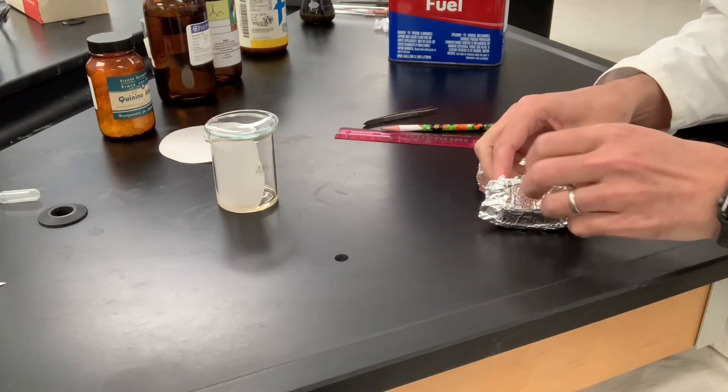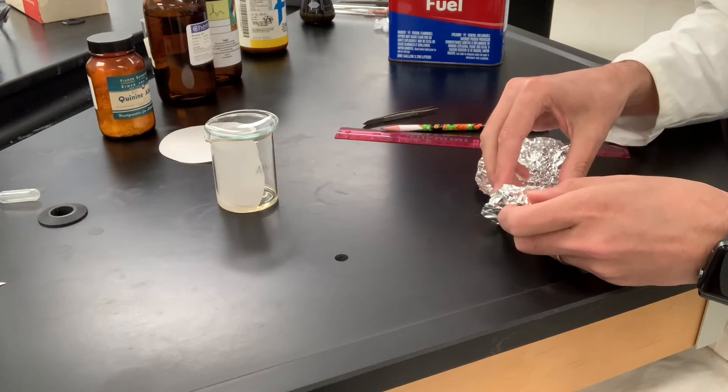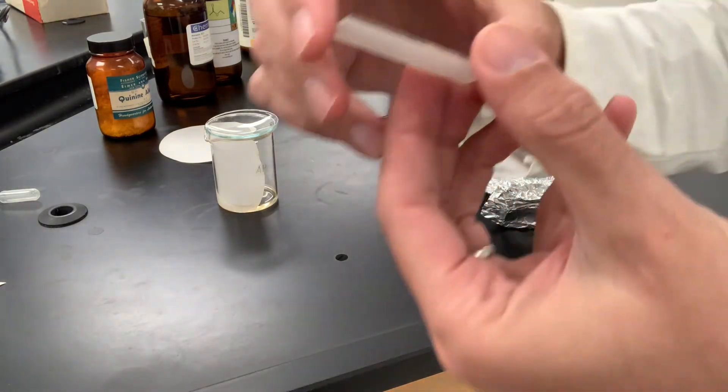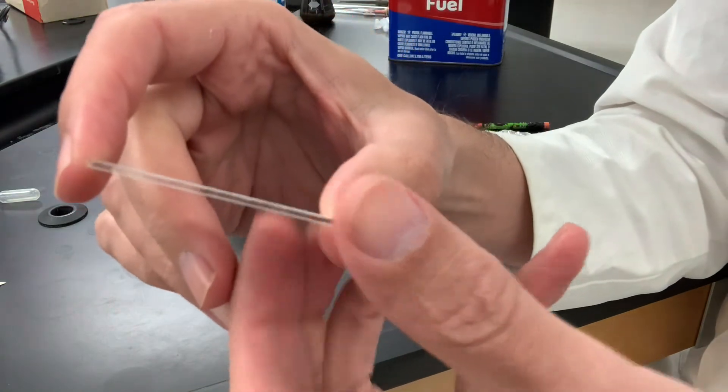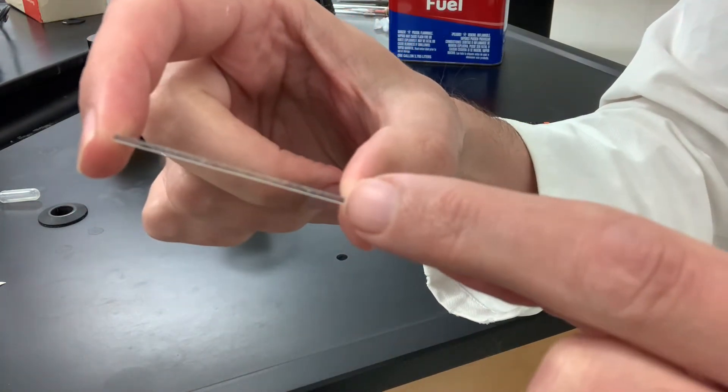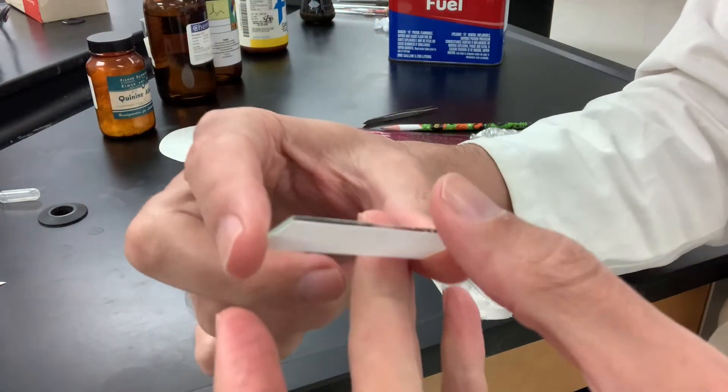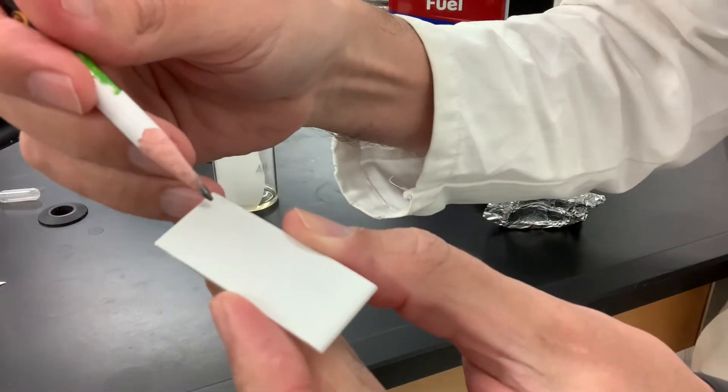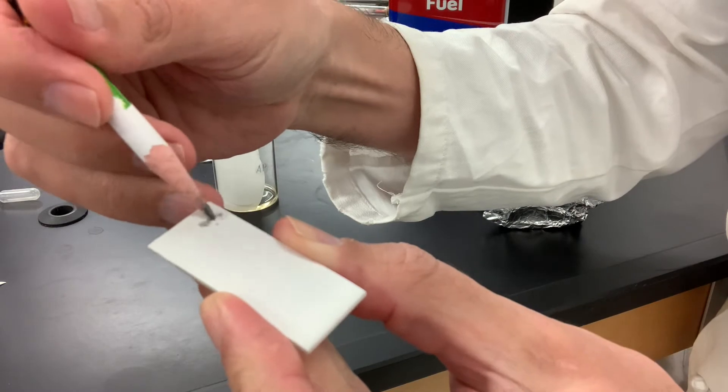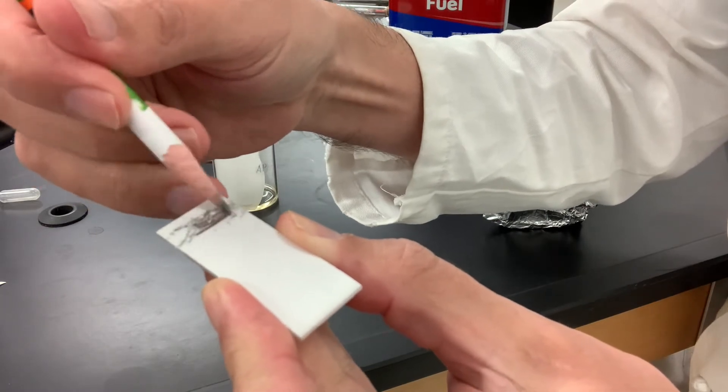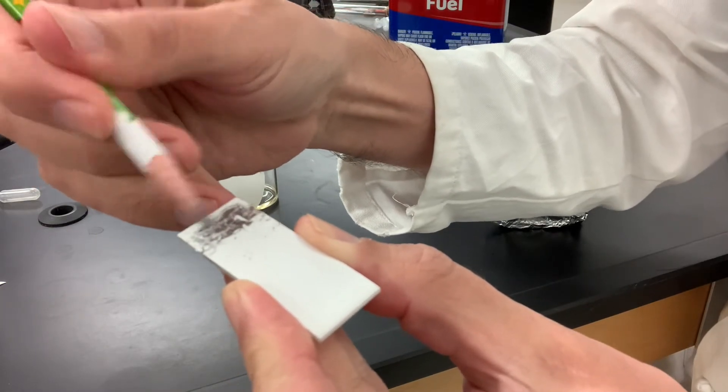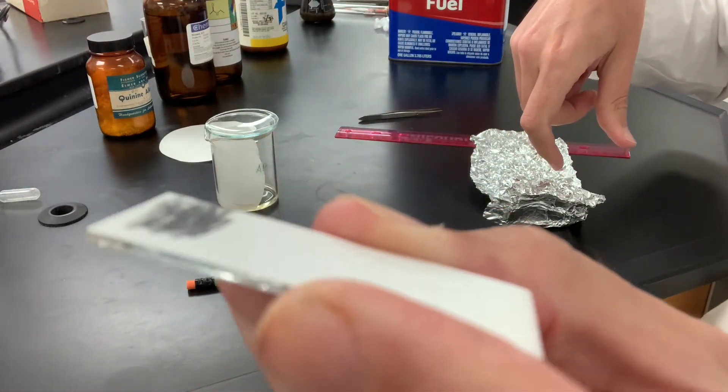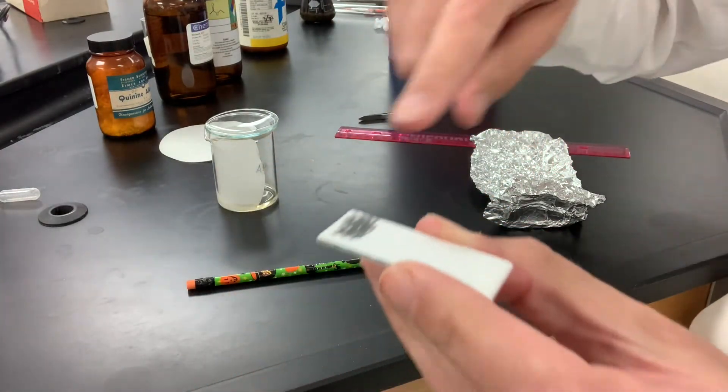Always handle the glass TLC plates by the edges. And if you look at this on its side, you can see that it's a piece of glass like a microscope slide, and then there's this thin layer of silica gel on the top. I'll just scratch it off so you can kind of see what that looks like. So it's just a very small thin layer of silica gel on there.